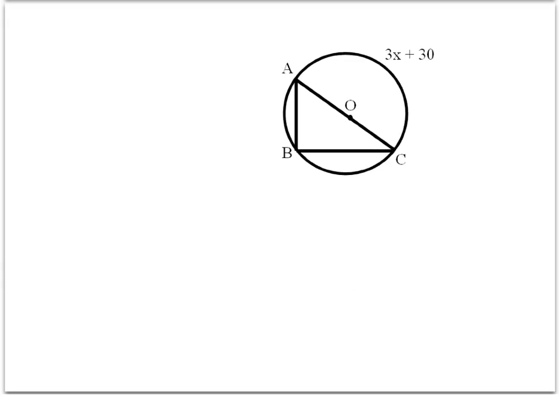The next diagram shows an inscribed triangle. We should notice a few things: this triangle is inscribed in the circle, and one side of the triangle is actually the same as the diameter of the circle. This creates a semicircle here.